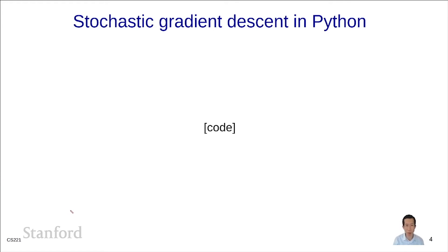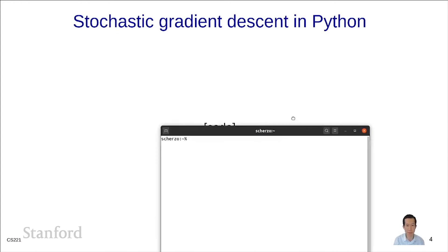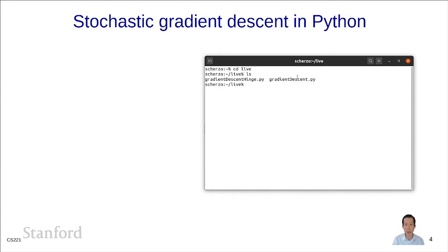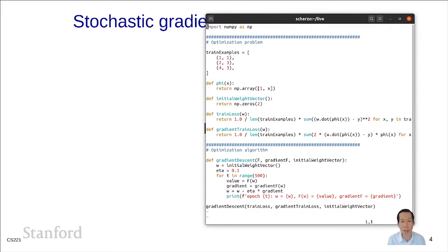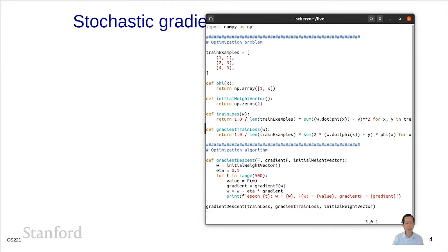Now let's explore stochastic gradient descent in Python. I'm going to code it up and see what happens. Remember last time we did gradient descent — I'm going to copy that code over and modify it to do stochastic gradient descent. To really show the difference, I'm going to make a larger dataset that is structured so we know what the right answer is — otherwise how can we verify it did the right thing?